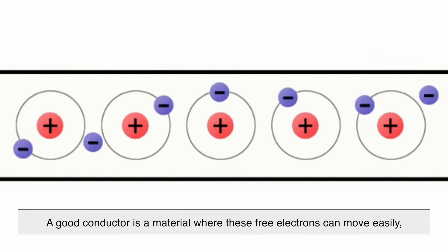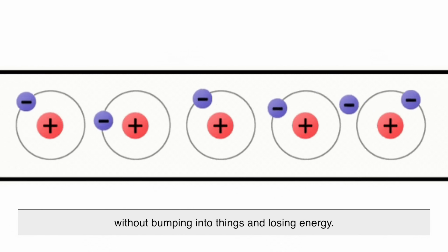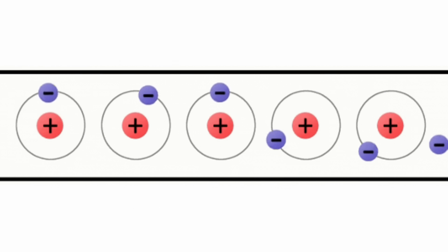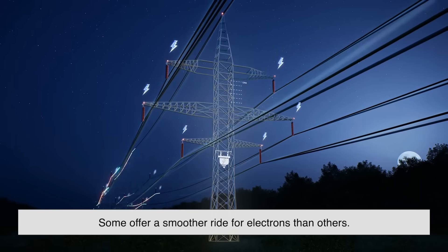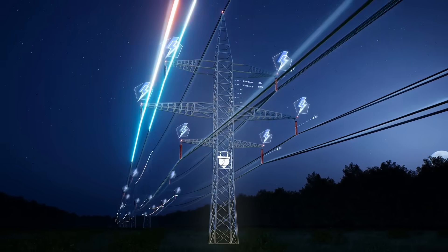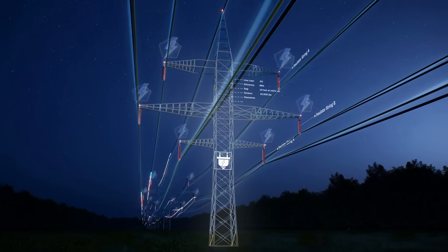So a good conductor is a material where these free electrons can move easily, without bumping into things and losing energy. In this regard, not all metals are created equal. Some offer a smoother ride for electrons than others. And that's where silver and copper shine, quite literally.